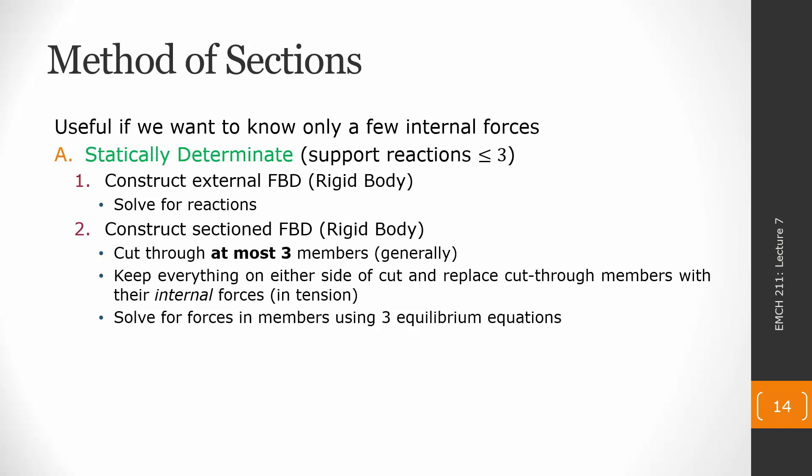As a general rule, when we make this cut, we want to cut through at most three members. Each member we cut through introduces an unknown internal force we need to find. Since the sectioned free body diagram is generally a rigid body, we get three equilibrium equations from it. Limiting to three members guarantees those equations are solvable. Cutting more than three members isn't incorrect — the section is still in equilibrium — but the number of variables will exceed the number of equations, requiring additional cuts or pin diagrams.